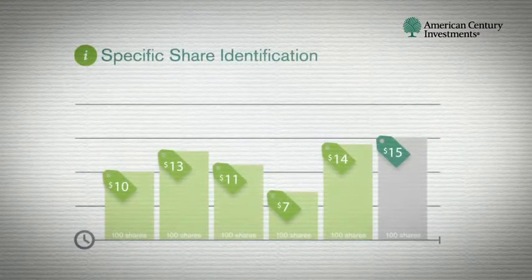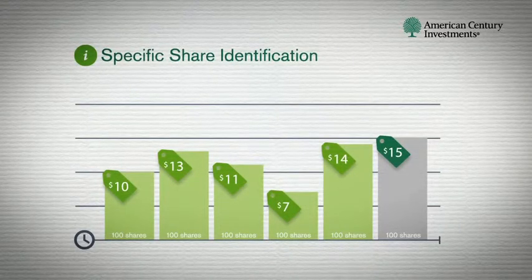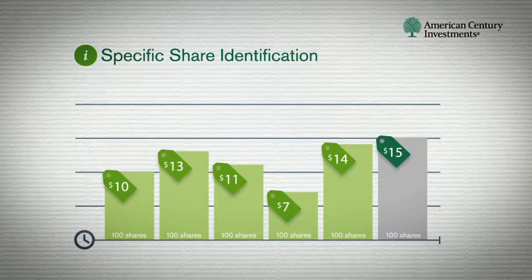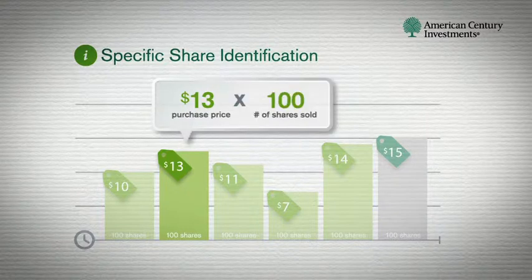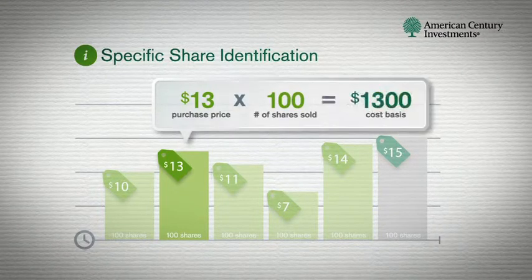For our last example, specific share identification, you choose the actual shares to sell by the date they were purchased. Let's say you want to sell 100 shares and you choose those bought on your second purchase, which were $13 a share. Multiply that by 100 shares, and your cost basis is $1,300.